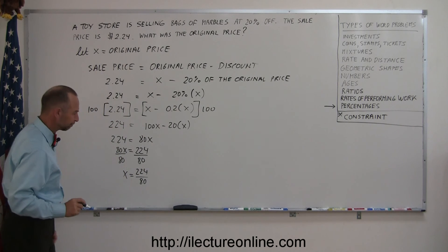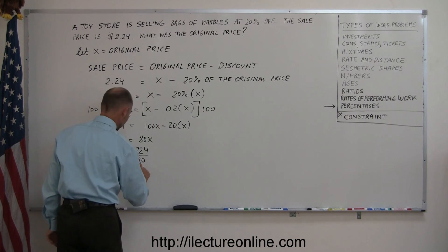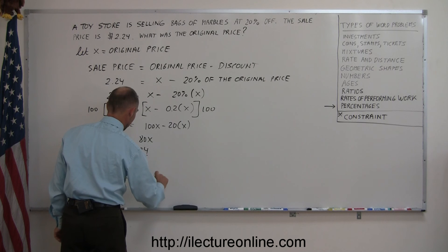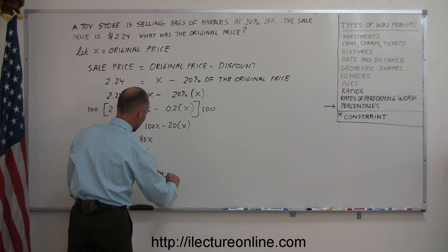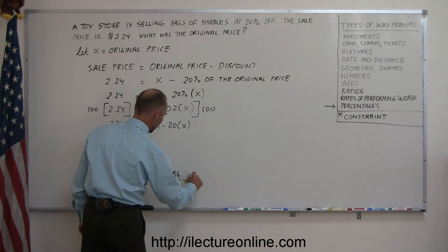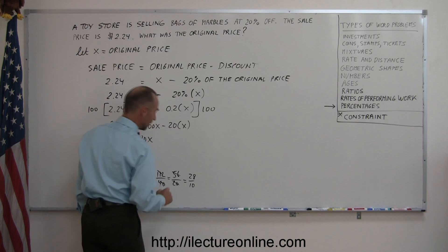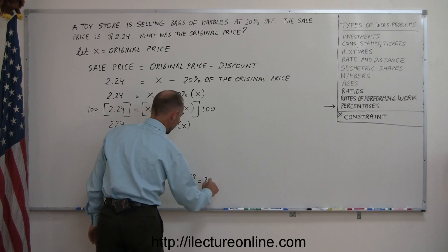All right, how do I simplify that? Well, first of all, they're both divisible by 2, so let's keep doing that, so 224 and 80, that gives me 112 divided by 40. They're still divisible by 2, so that gives me 56 over 20. They're still divisible by 2, so it gives me 28 over 10, and now I can simply divide by 10, and so it would be 2.8.